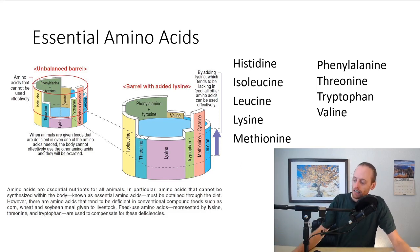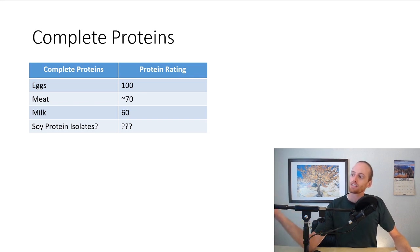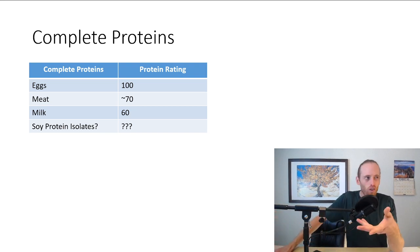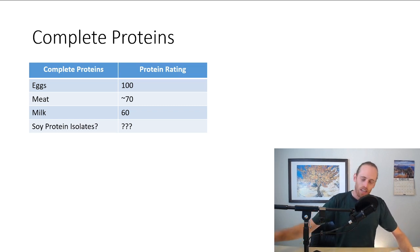Let's check out complete proteins. A complete protein has all of the essential amino acids, all nine. We see eggs, meat, milk - these have all nine. Some soy protein isolates also have all nine essential amino acids, but soy is lacking, I think, methionine. And they can add that in, they can isolate different proteins.